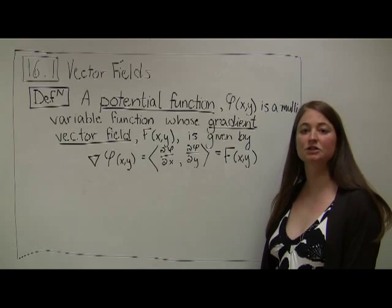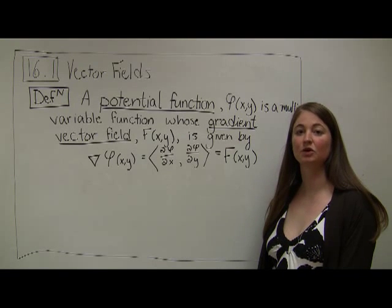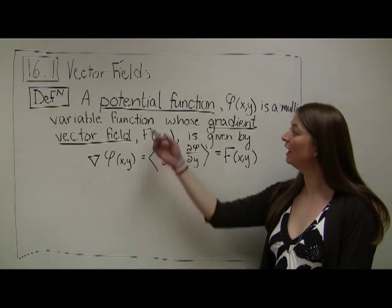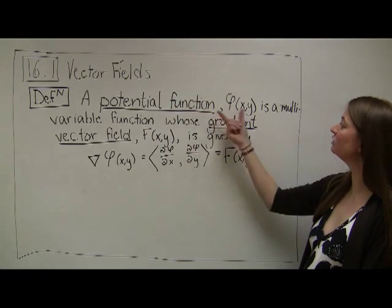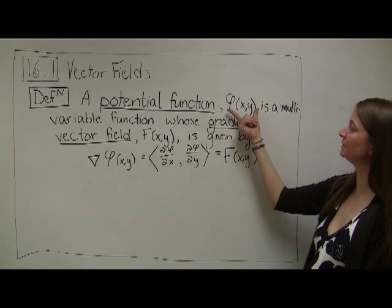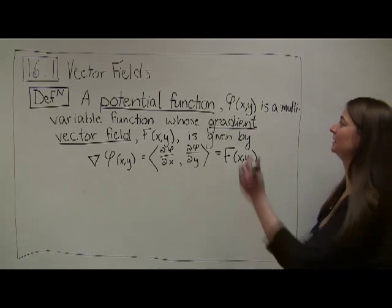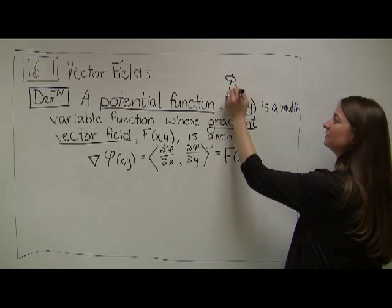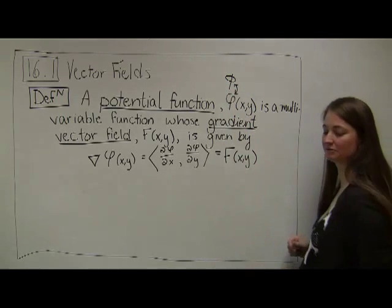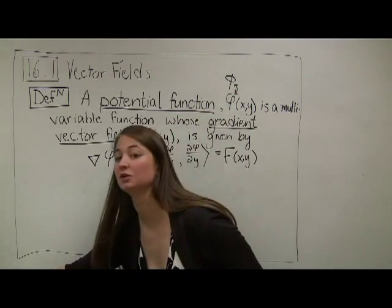Now I'm going to talk about potential functions and gradient vector fields. I have a definition up here. A potential function is usually represented as phi of xy — that's what this Greek symbol means. Some people write phi's differently; you can do it either way. It's the same phi we used when talking about spherical coordinates.